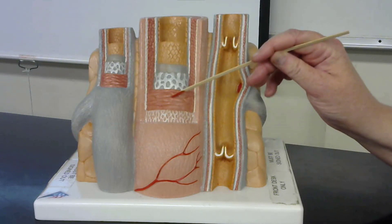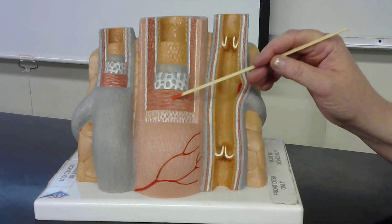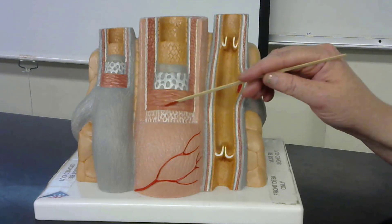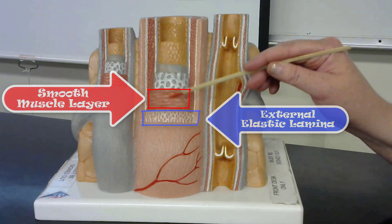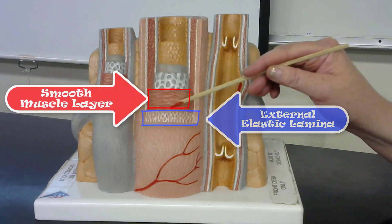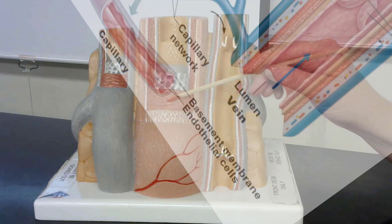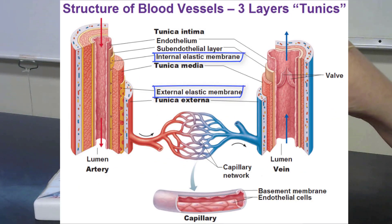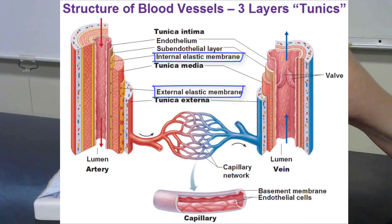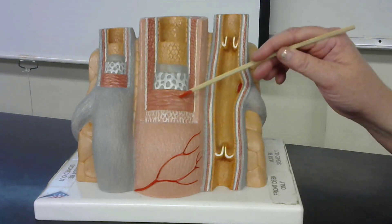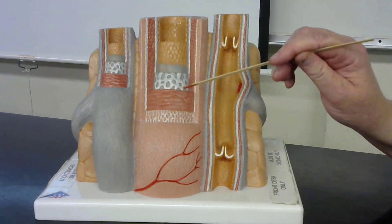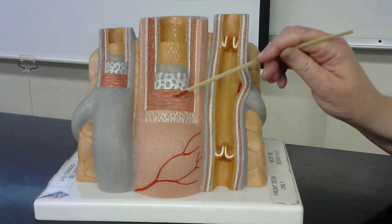The tunica media in arteries is going to include the smooth muscle layer along with an external elastic lamina. The tunica media of veins will not have an external elastic lamina, but will have a smooth muscle layer. The smooth muscle layer is usually much thinner in a vein versus an artery.